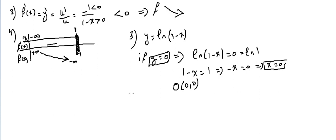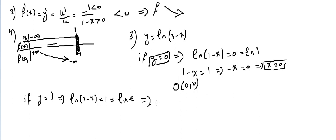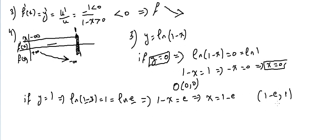We can find more particular points for accuracy. If y = 1, since 1 = ln(e), then ln(1 - x) = ln(e), so 1 - x = e, meaning x = 1 - e. We have another point with abscissa 1 - e and ordinate 1.